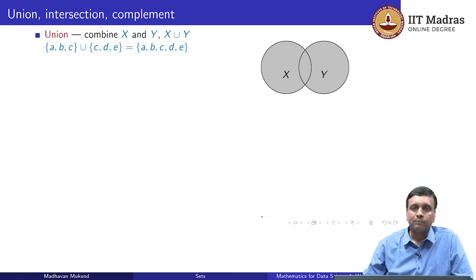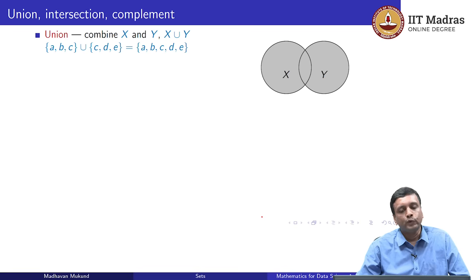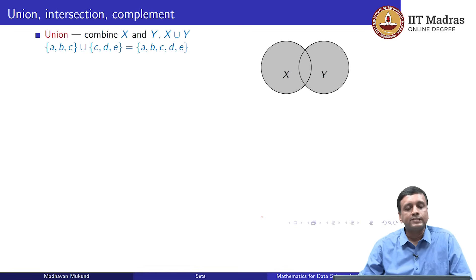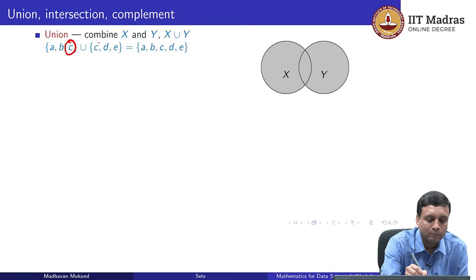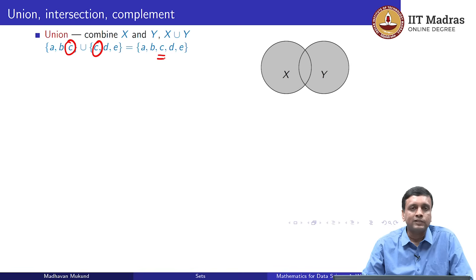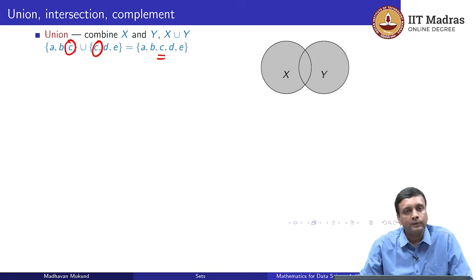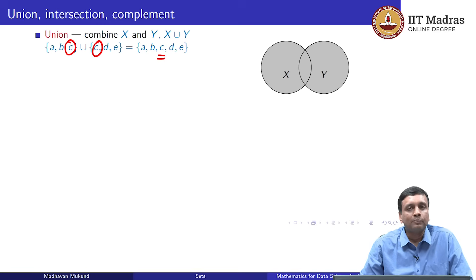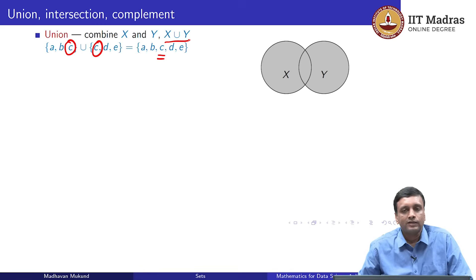Let us look at some simple operations on sets. The first one is union. The union of two sets just combines them into a single set. Suppose we have {A, B, C} as one set and we combine it with {C, D, E}. We get a single set, and notice that elements which appear in both sets appear only once in the final set — a set has no duplicates. So the cardinality of the union will in general be less than the cardinalities of the two sets put together. Here we have two three-element sets, we take the union, and we get a five-element set — not six — because there are common elements. The symbol for union is the U symbol.